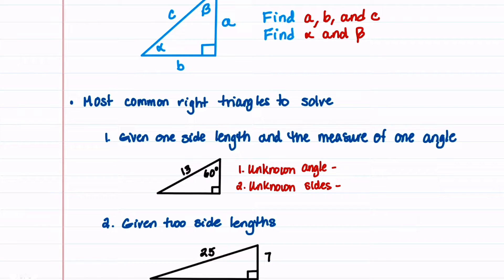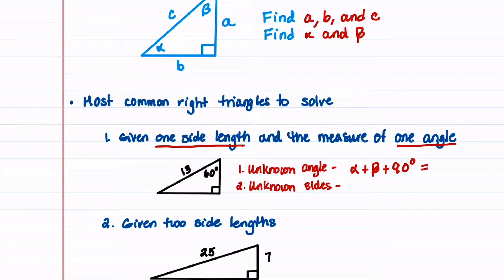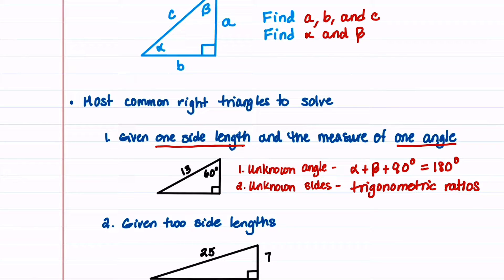There are two common right triangles that we're often asked to solve. The first is a right triangle where we're given one side length and the measure of one angle. To find the unknown angle, we use the fact that alpha plus beta plus 90 degrees equals 180 degrees. To find the unknown sides, we use trigonometric ratios — for example, sine theta equals the opposite length divided by the hypotenuse.